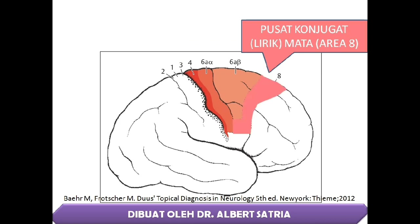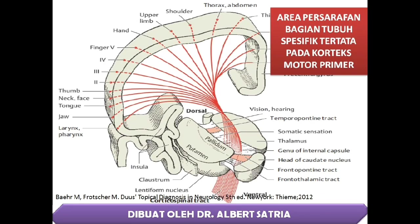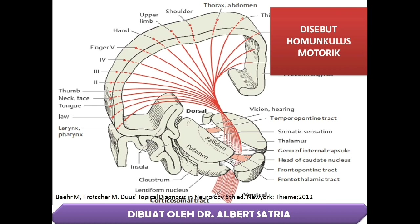Ini adalah area Cortex untuk pusat konjugat atau lirik mata. Bagian ini akan dibahas lebih lanjut pada video pembahasan nervus kranial bagian gerakan mata. Area persarafan bagian tubuh spesifik tertata pada Cortex Motor Primer, disebut Homunculus Motorik.